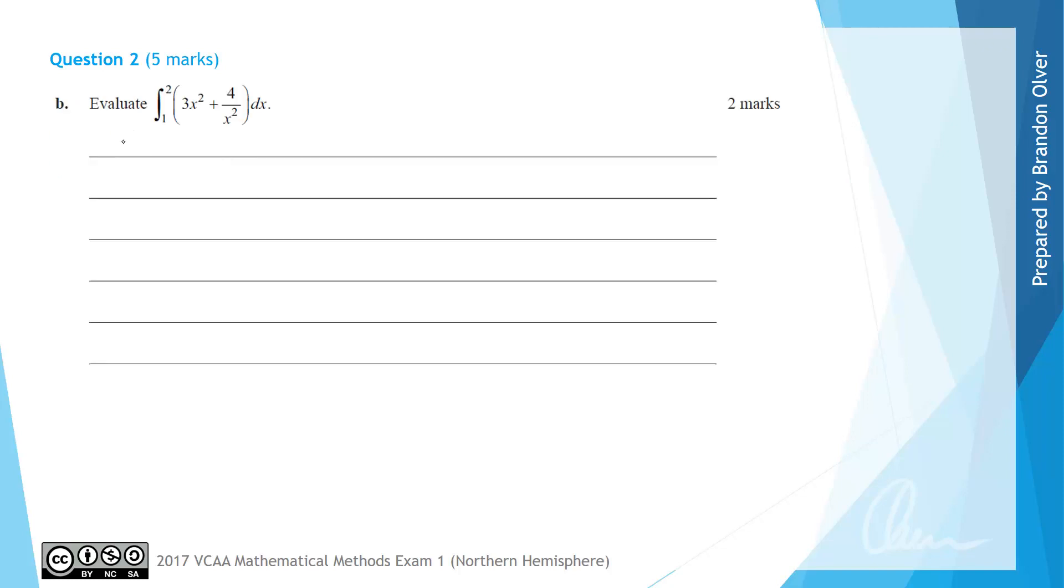For part B we're asked to evaluate the definite integral between 1 and 2 of 3x squared plus 4 over x squared dx. So that means we're asked to evaluate the integral from 1 to 2. This is going to be 3x squared plus 4x to the power of negative 2 dx. Then we calculate the antiderivative.